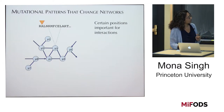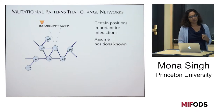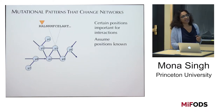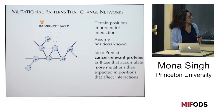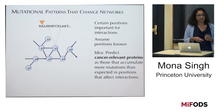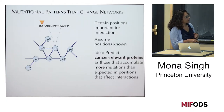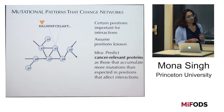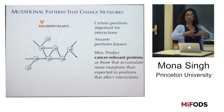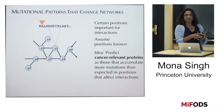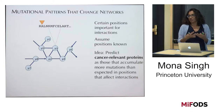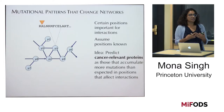One very important point is that when you look at this one-dimensional representation of a protein, it's only certain positions that are important for network interactions. Proteins do basically everything important in a cell, but their functions depend on the interactions that they make. So if you add, change, or break interactions, you are affecting the protein network. Our idea is to not treat all mutations the same, but to predict cancer-relevant proteins as those that accumulate more mutations than expected in positions that affect interactions.